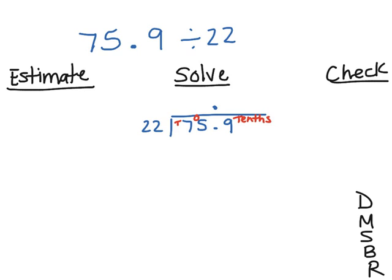So how many times, or can, I should start with can, 22 going to 7 tenths? No, it can't. Can I go into 75 ones? Yes, it can. So that's what I'm going to start to estimate. So under this, I would write 75 ones divided by 22.